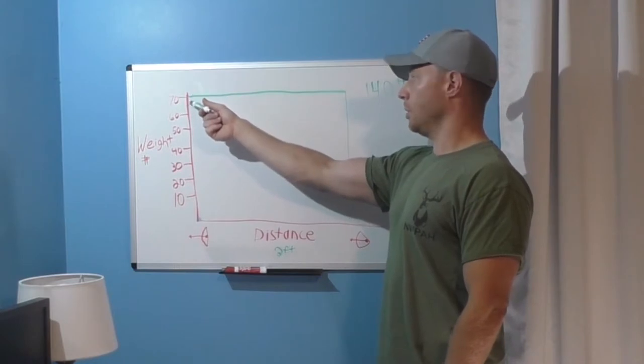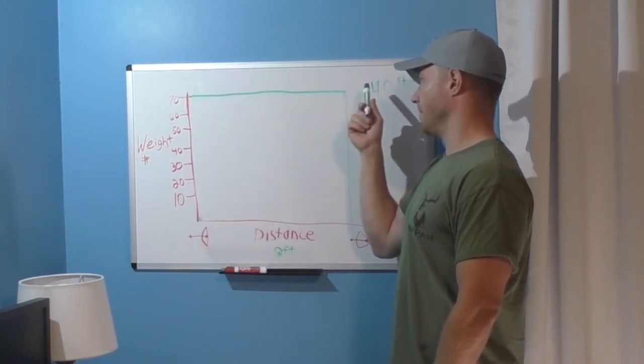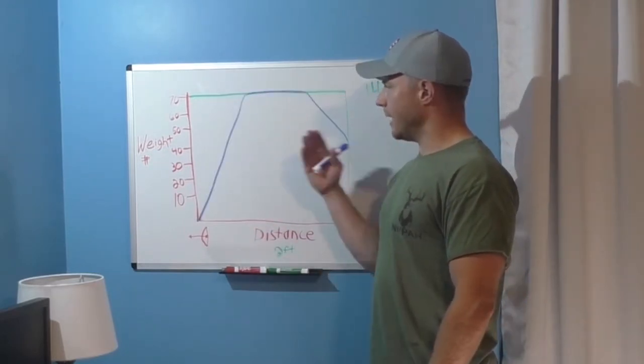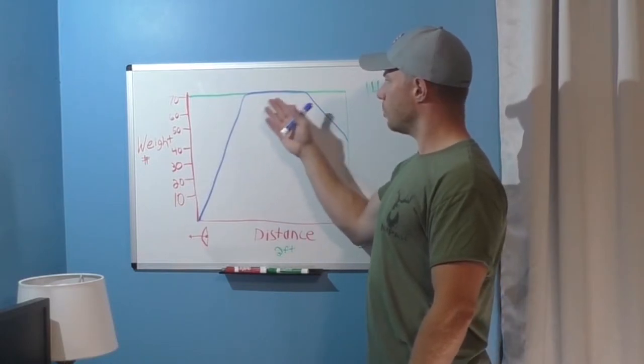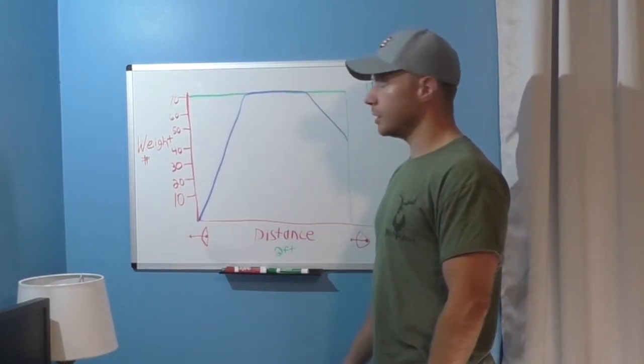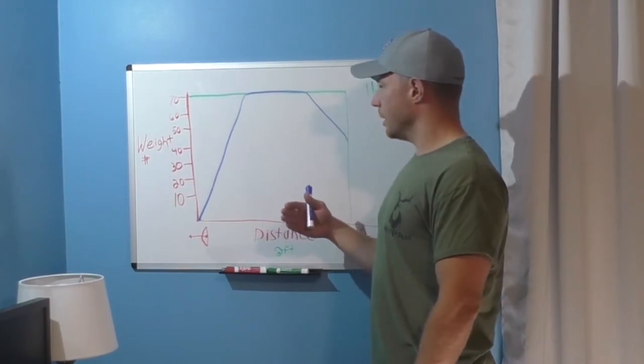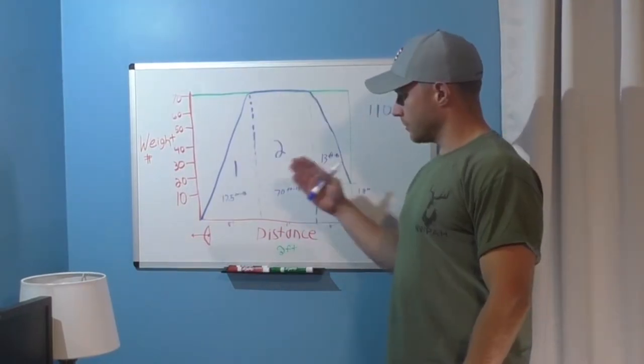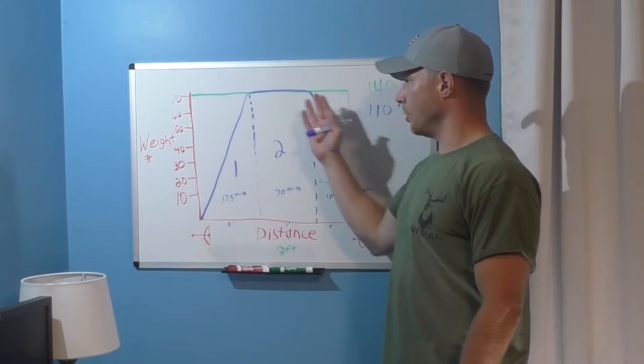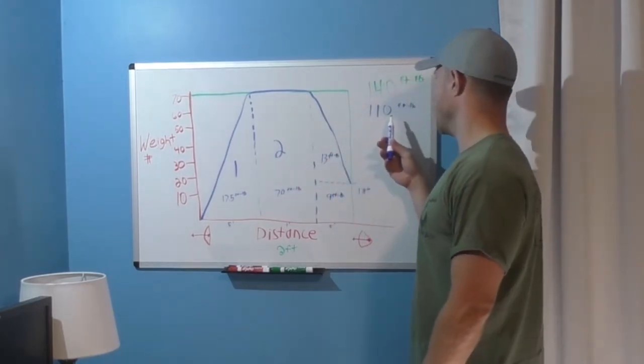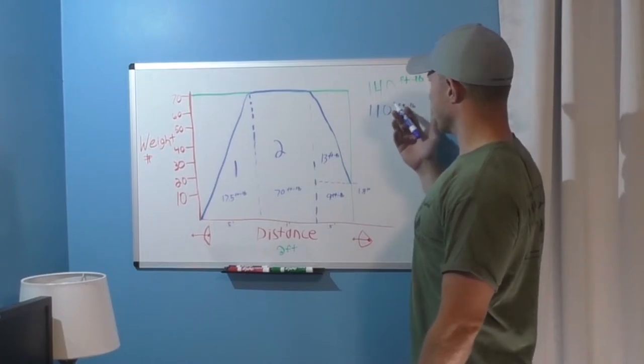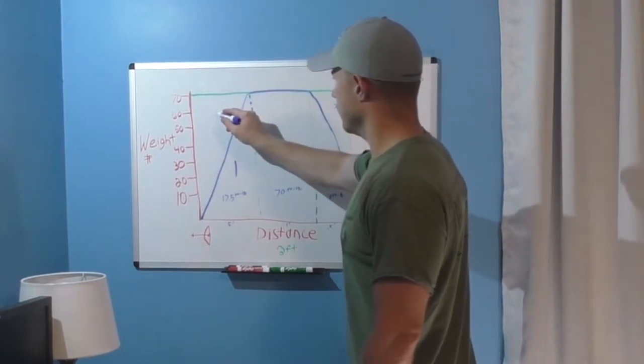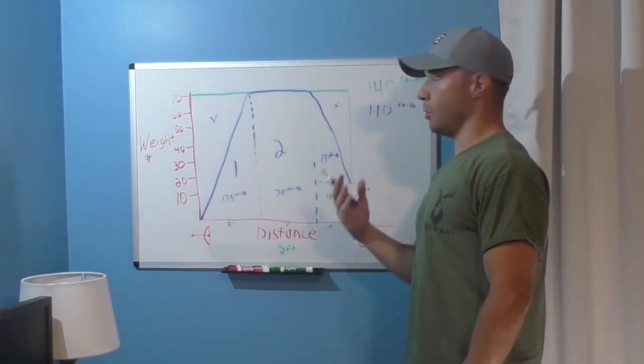So how would we get the area under a curve for something that's a little more realistic to a modern compound bow? We could do some complicated calculus but we can do some simple math and get a pretty good approximation. So we broke this down into some smaller areas and we were able to come up with the total of the area under this curve and it's 110 foot pounds. Now you can see that that's 30 foot pounds less than our theoretical maximum but that's of course because we have to give up this area and this area in order to make that bow usable.